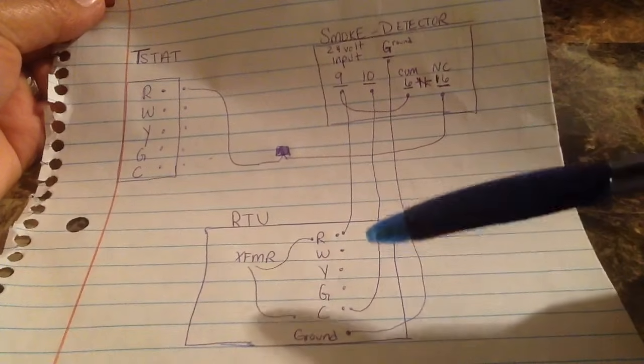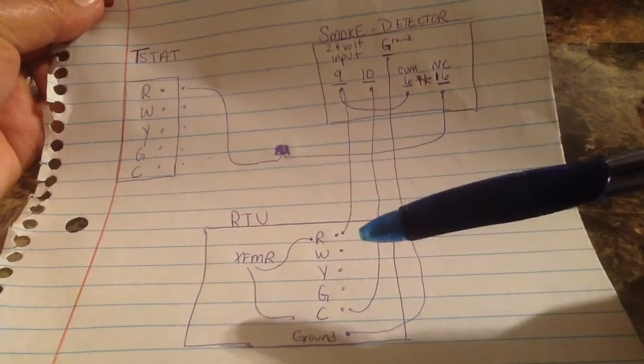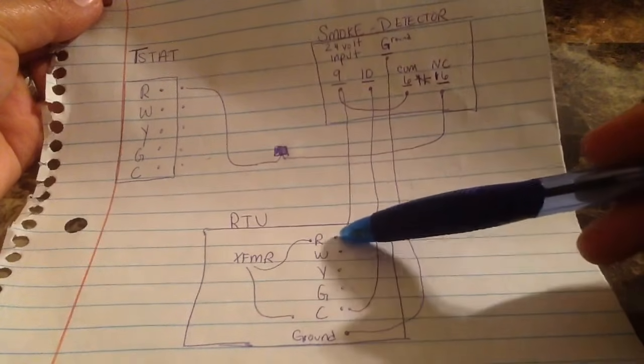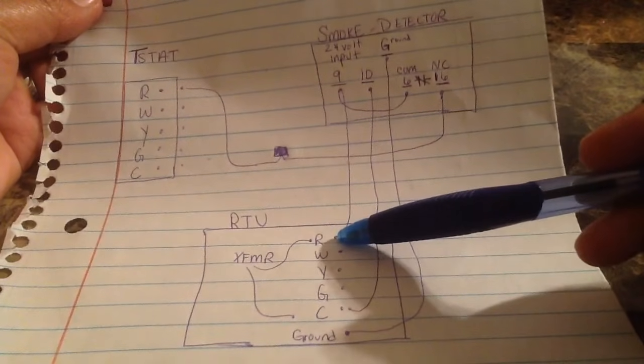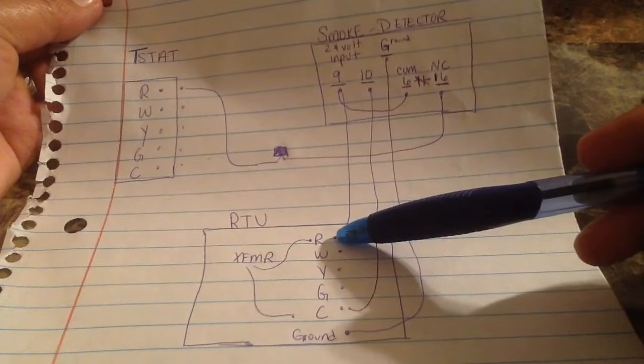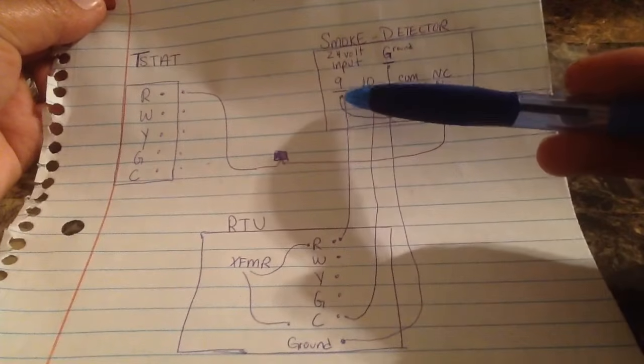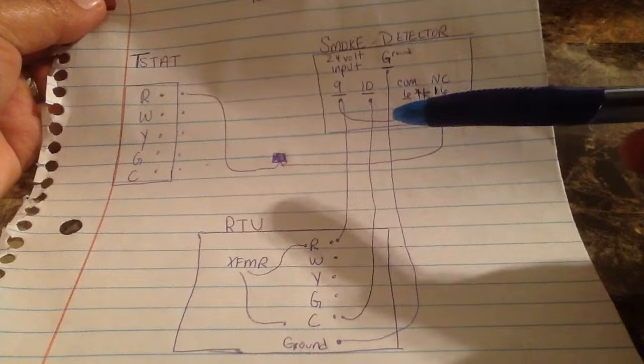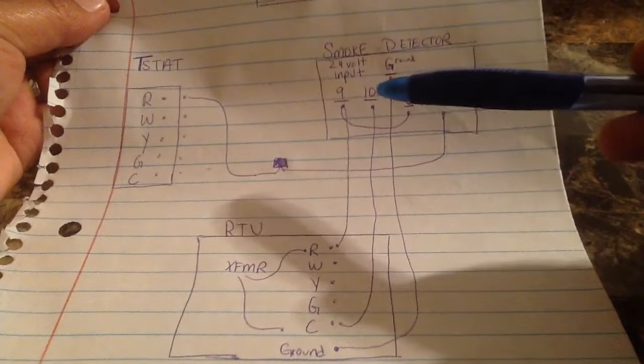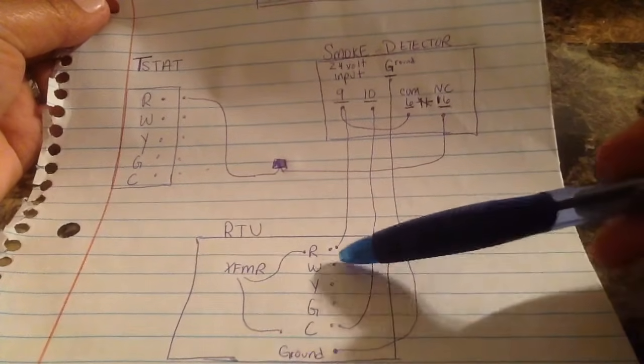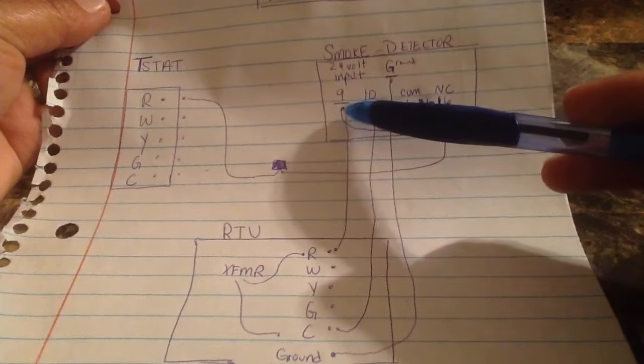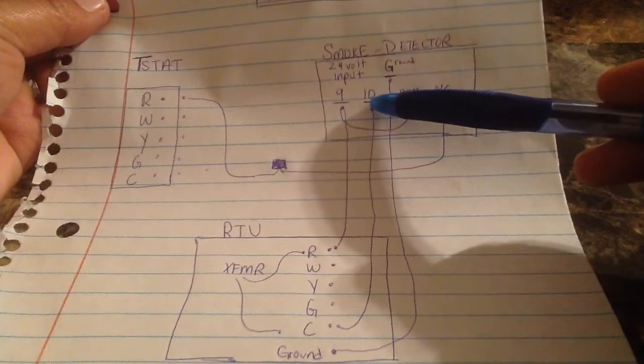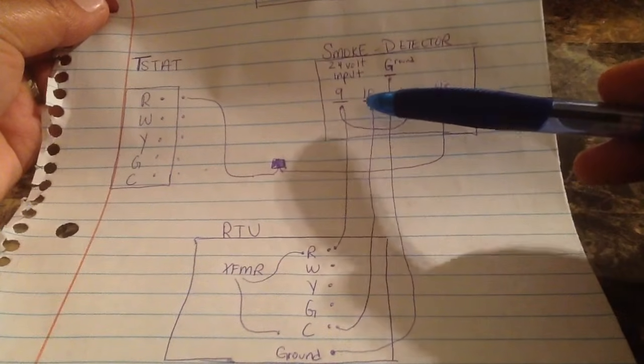One of the four wires I'm running, I'm stealing power at the R terminal strip at the rooftop and I'm going up to, typically most smoke detectors are going to use nine and ten are going to be your 24 volt input to power up the detector. So 24 volt R goes to nine, common goes to ten. That's powering up the smoke detector.